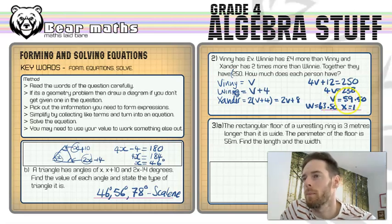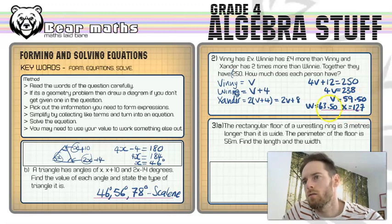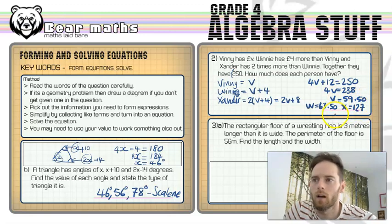So v, Vinny has got 59 pound 50. If Winny's got 4 pound more, then Winny is equal to 4 more pounds than this. So 63 pounds 50. And then we're going to need to double that and then add 8 pounds on to get what Zander's got. So if I doubled the 59 pound 50, that's a quid. And then 9 pound doubled is 18. That's 19 pounds. So 119 pounds plus eight pounds is 127 pounds. So there's the three quantities of money that each person has.